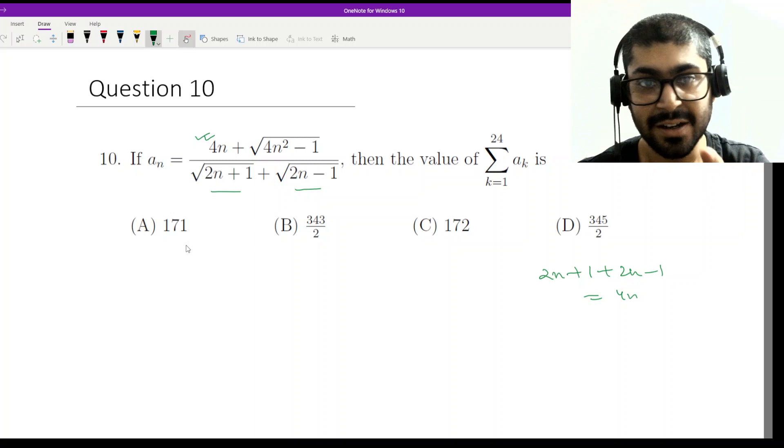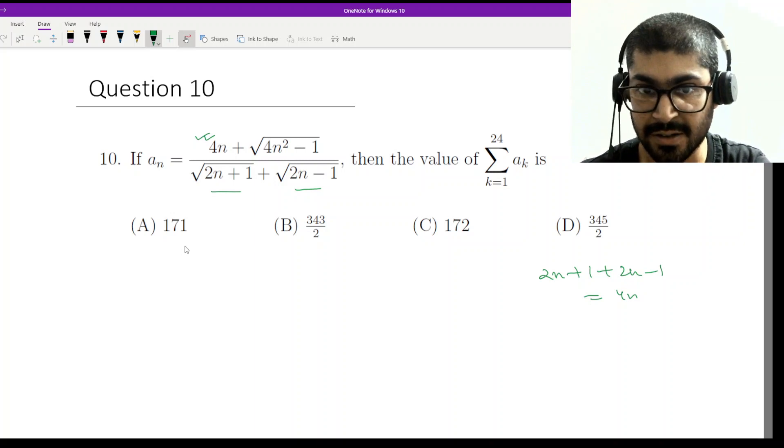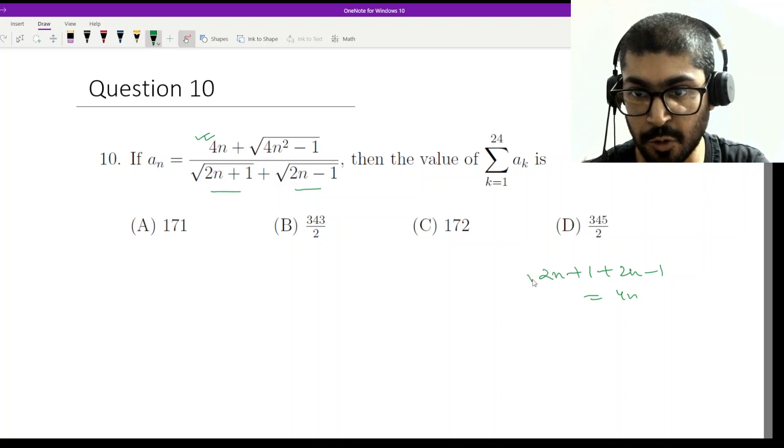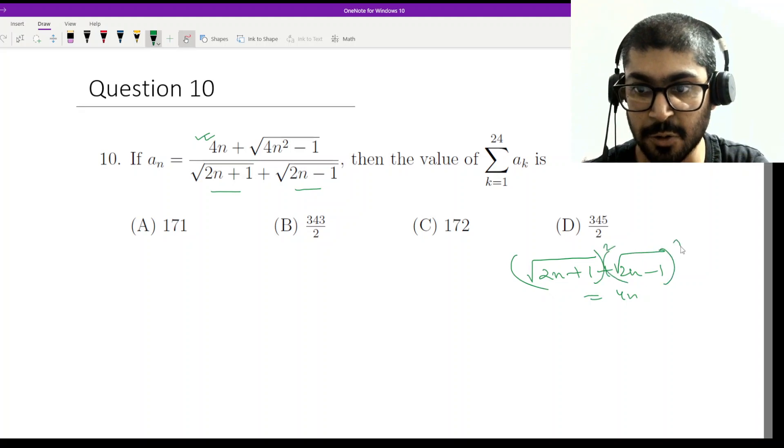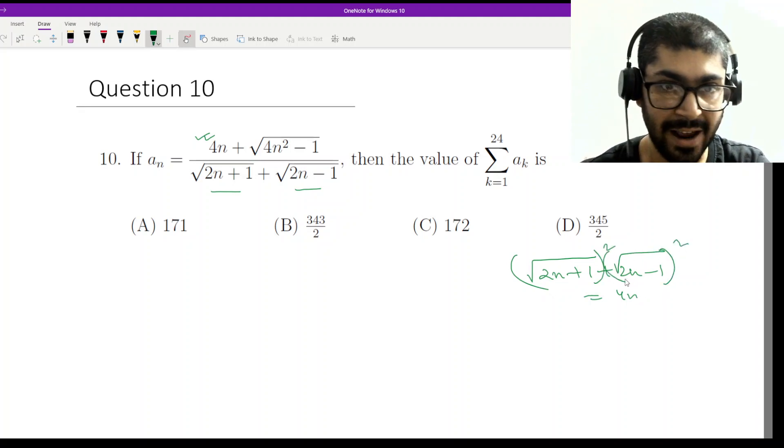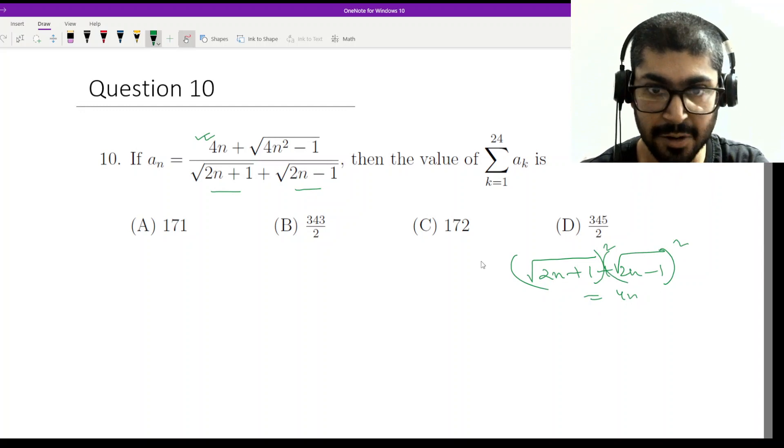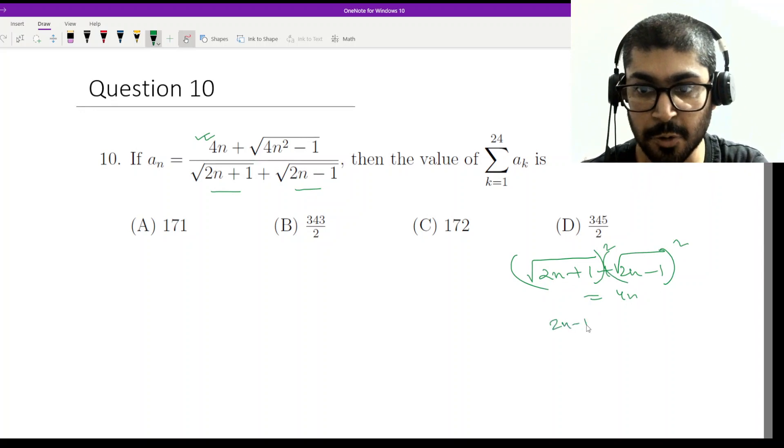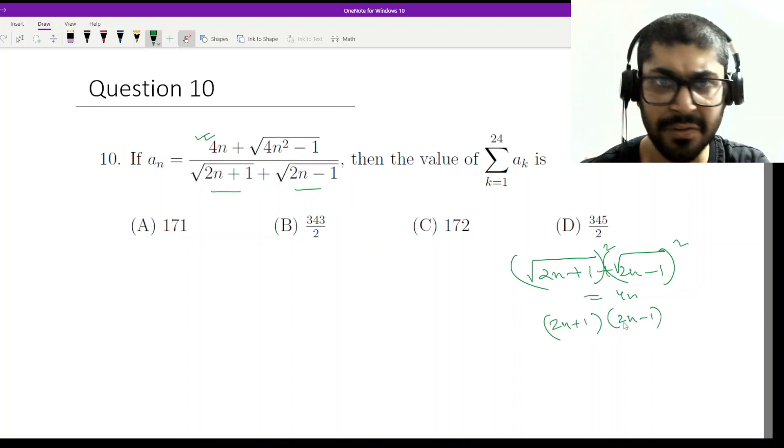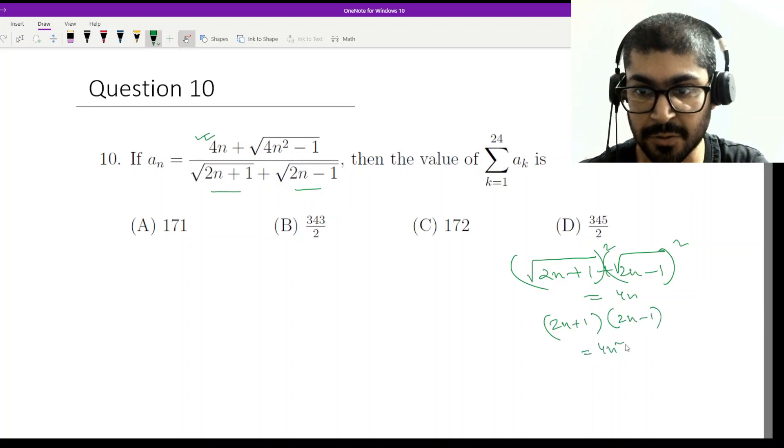That means you have the sum of the squares of these. So I can write root of 2n whole square and root of 2n minus 1 whole square that is 4n. So I have the sum of squares there and 2n plus 1 into 2n minus 1 is by the formula of a square minus b square, I have 4n square minus 1.